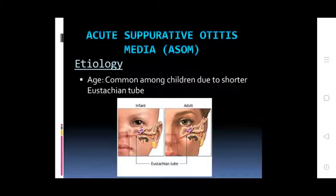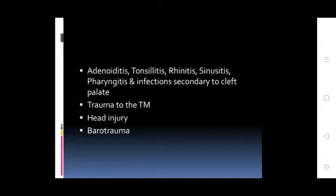Acute Suppurative Otitis Media is common among children due to the shorter Eustachian tube. Causes include adenoiditis, tonsillitis, rhinitis, sinusitis, pharyngitis, and infection secondary to cleft palate.